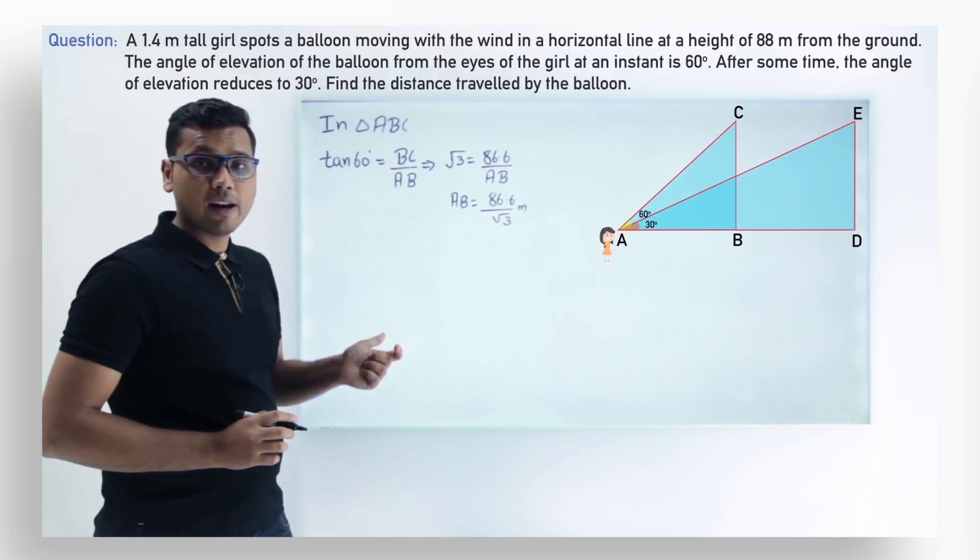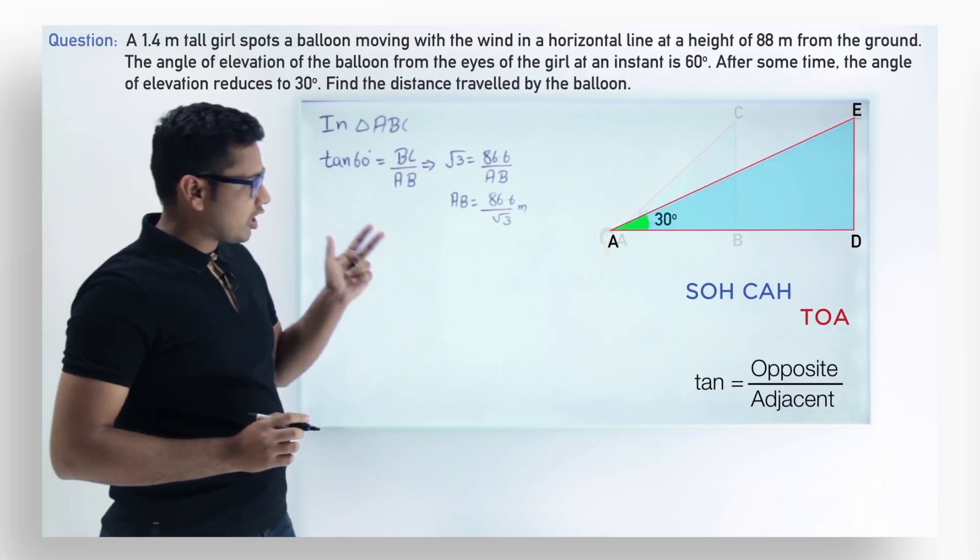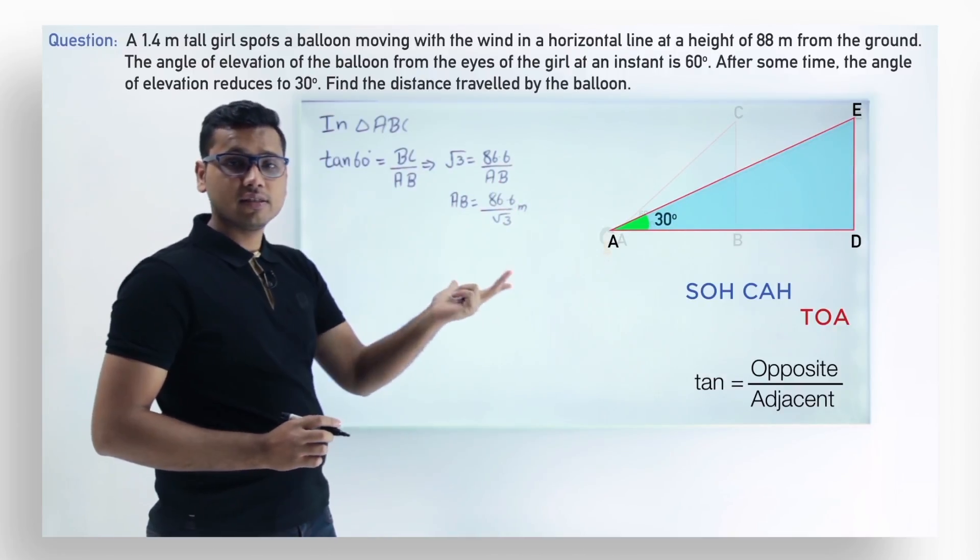So we can apply TOA in triangle ADE and get the length AD.